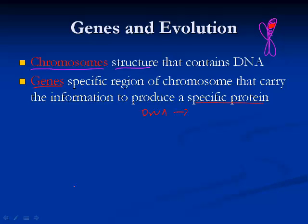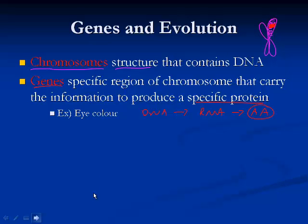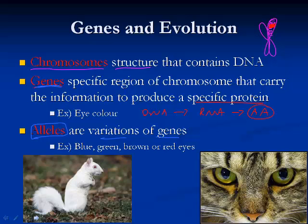What those genes are is a specific region of DNA that carries the information to produce a specific protein. So it's the DNA spot that will get changed into RNA, which will end up arranging the amino acids in a specific order to make our proteins. For example, eye colour. Since we are diploid organisms — which means we have two sets of chromosomes — we have different possible variations of those same genes, called alleles. So for eye colour, you may have blue eyes, green eyes, brown eyes, or if you're an albino, red eyes.